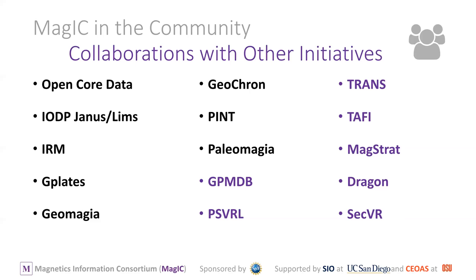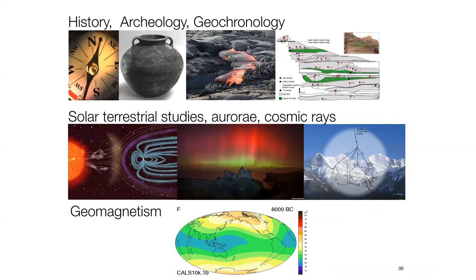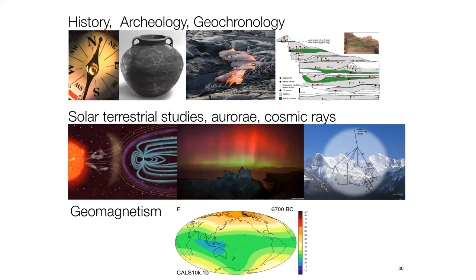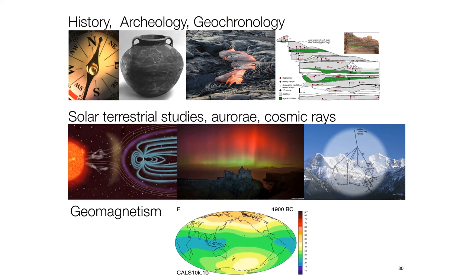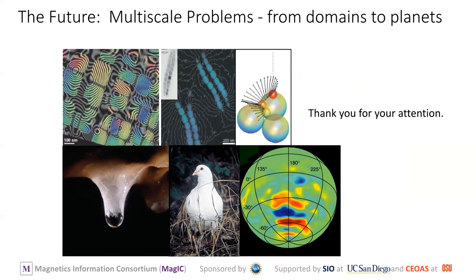We've missed EPOS — we'll add it next time. Here's the broader scope: we know the data we collect is useful for all sorts of things — history, archaeology, geochronology, solar terrestrial studies, geomagnetism. In the future we can see broadening out to some of those other themes mentioned before. We are already intrinsically involved through the verification and reliability of data in looking at multi-scale problems, understanding the basics of how the magnetic signal is recorded all the way from domains to other planets.